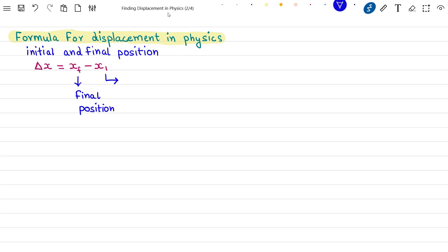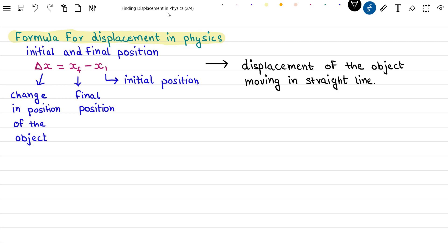Where xf is the final position, xi is the initial position, and Δx is the change in position of the object. This formula gives displacement of the object moving in a straight line.